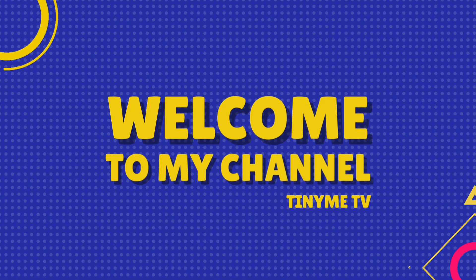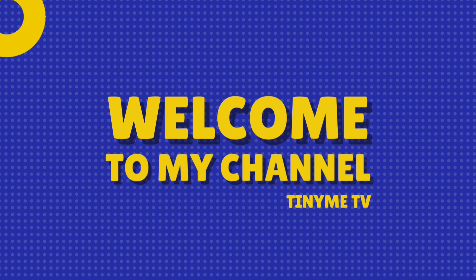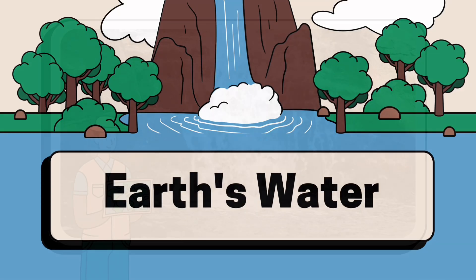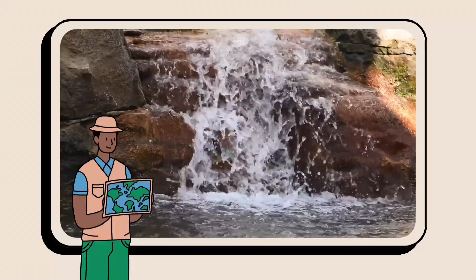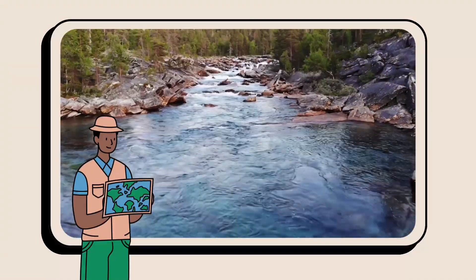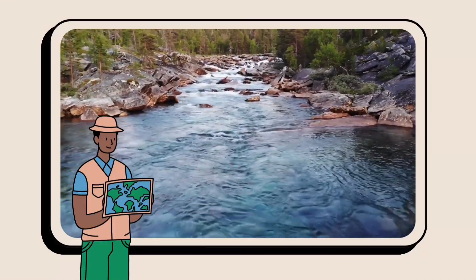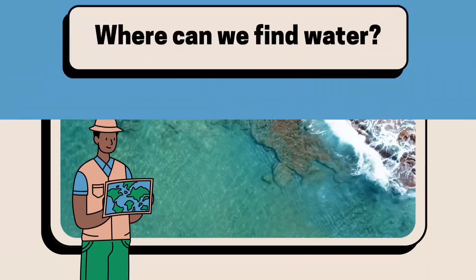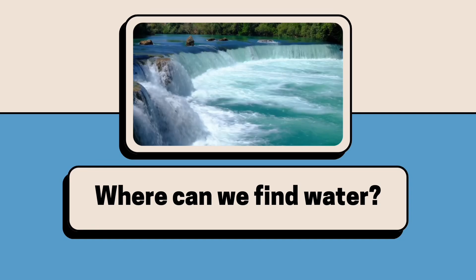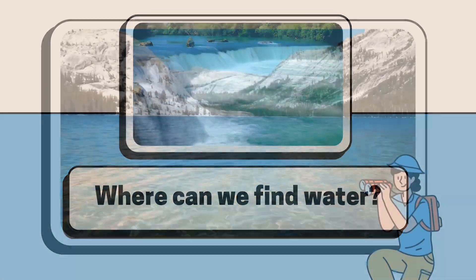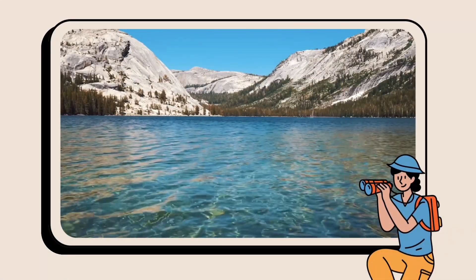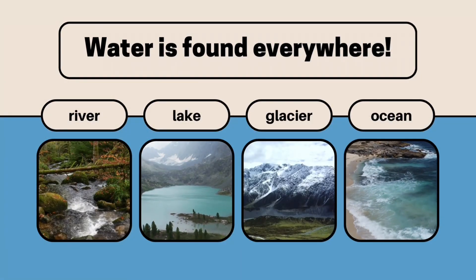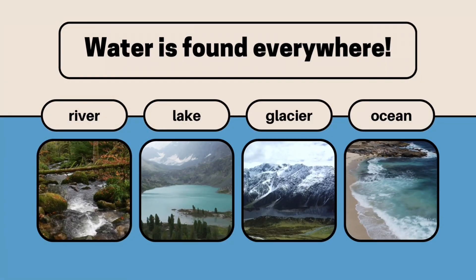Welcome to TinyMeTV. Earth's Water. Where can we find water? Water is found everywhere — rivers, lakes, glaciers, and the ocean.